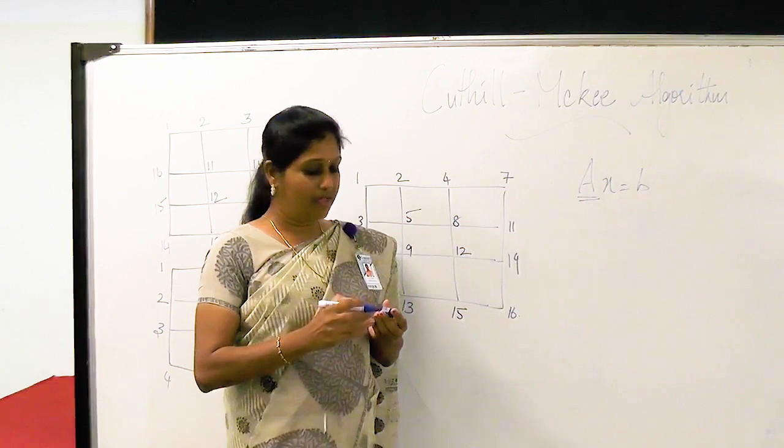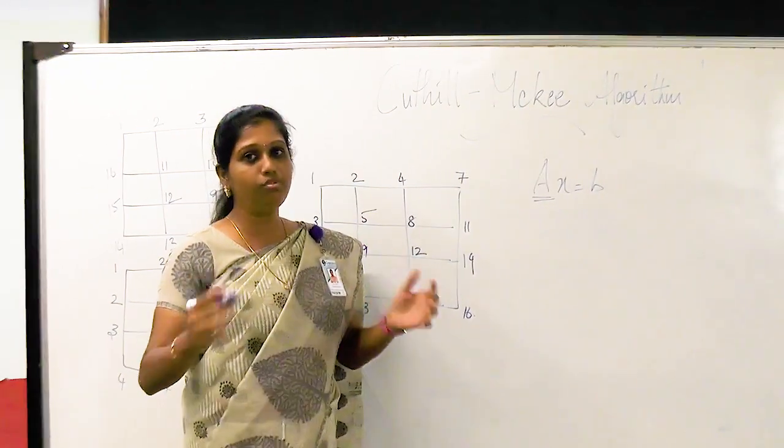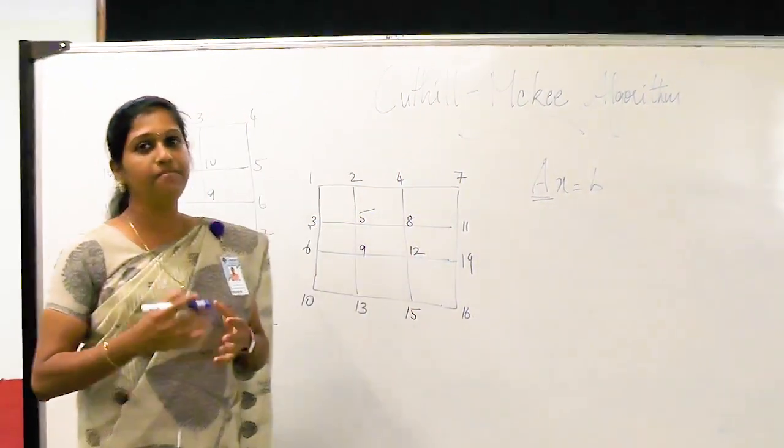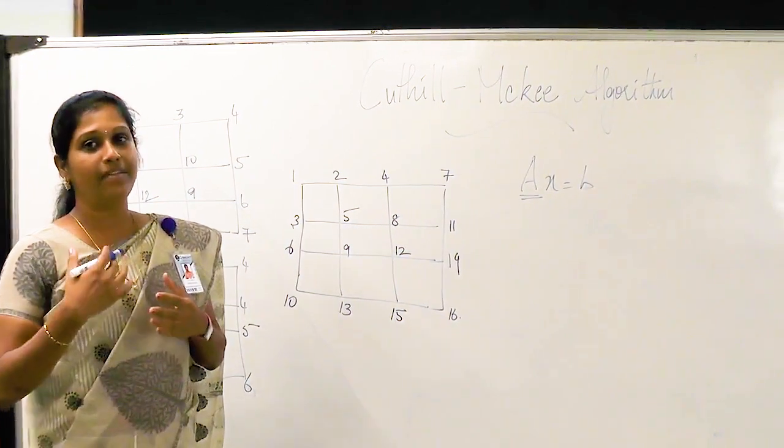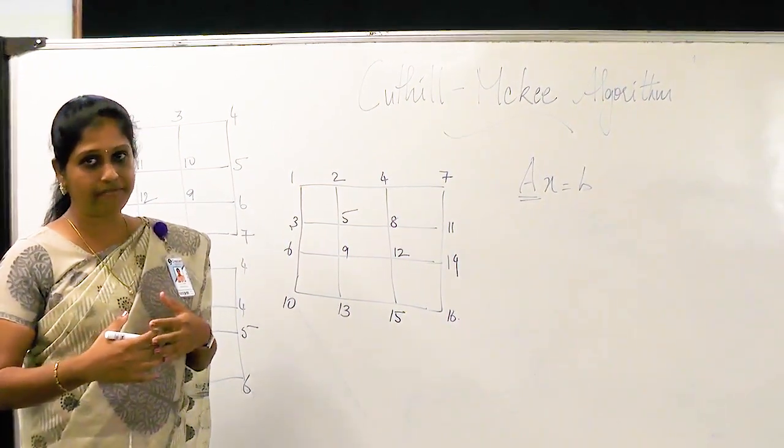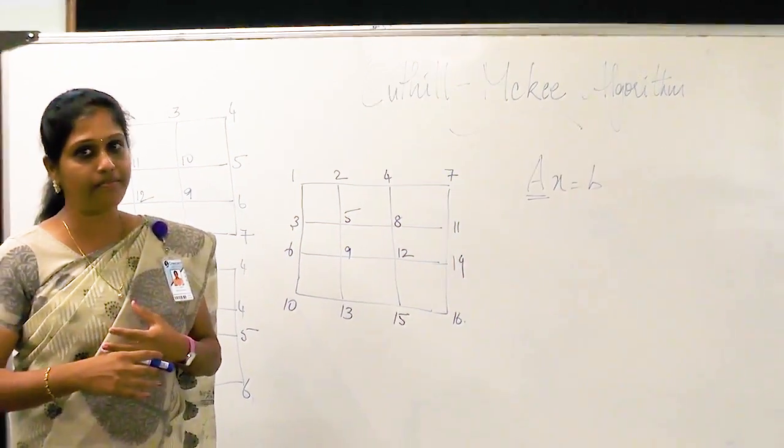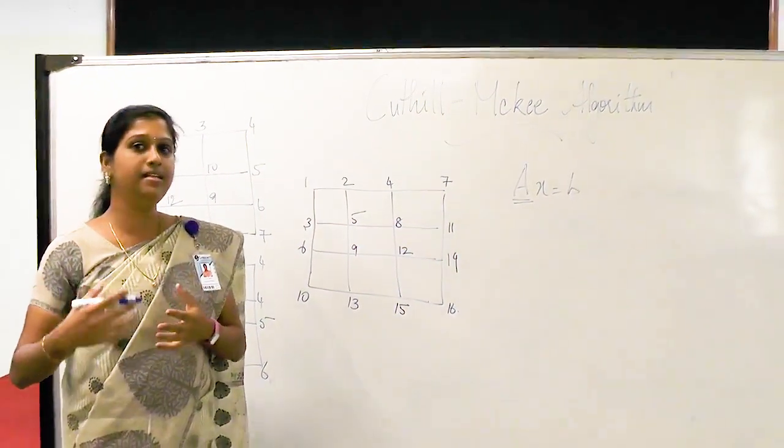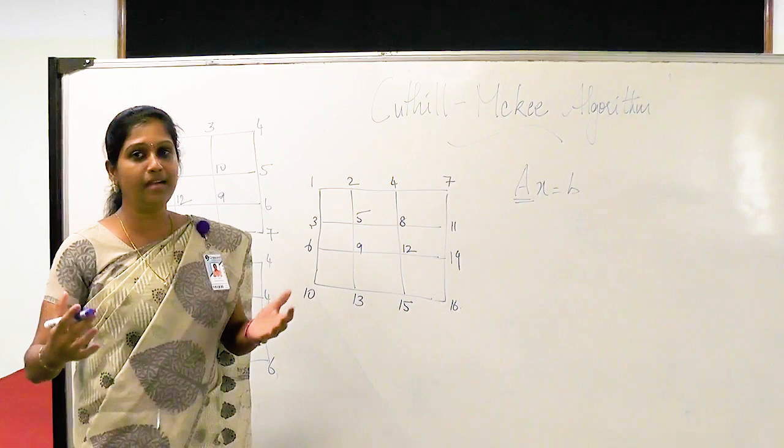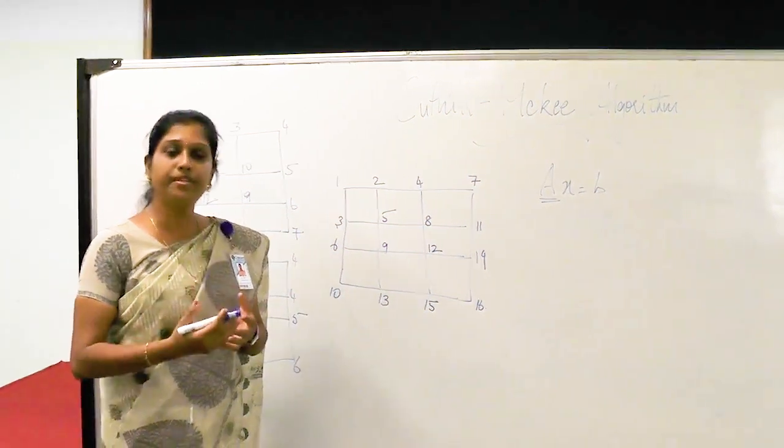Since the A matrix is a huge sparse symmetric matrix, we cannot solve it directly. And we convert it into a graph and then we reduce the bandwidth of the graph. Finally, the resultant graph gives us a banded matrix which would be comfortable to solve.